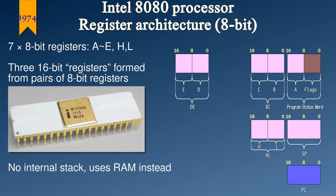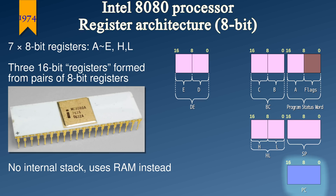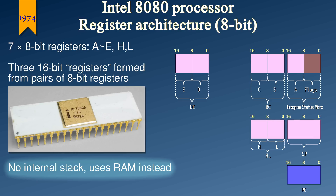Two years later, they came up with another processor, this time called the 8080. It didn't have that many changes, but they had now consolidated the flags into a single 8-bit register, which together with the accumulator could be thought of as a single 16-bit register called Program Status Word. The memory address width was now increased to the full 16 bits. In addition to the program counter register, there was now a stack pointer register called SP. This meant that the program no longer had an internal stack, but instead it used the system RAM, allowing for much more complex programs and call structures than ever before.